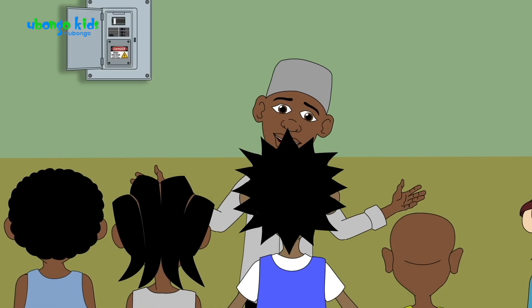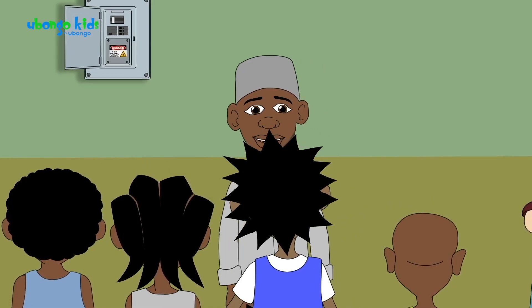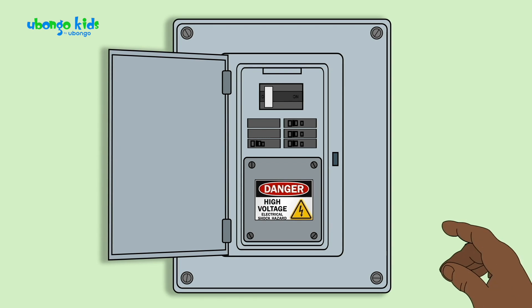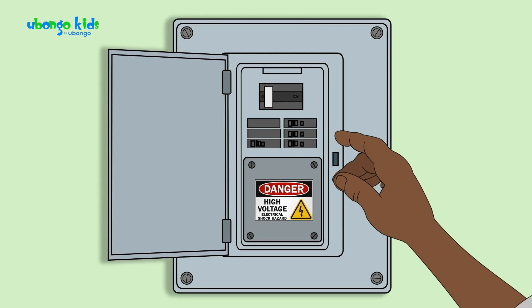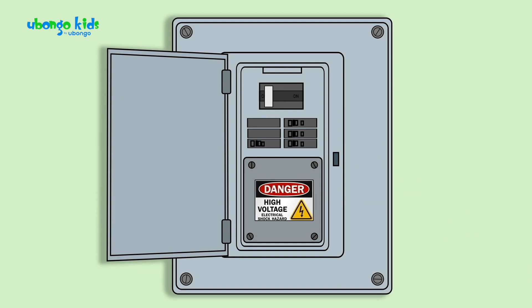Houses with electricity have a system to manage the flow of electricity. The role of this circuit breaker is to control the flow of electricity for the safety of the house.